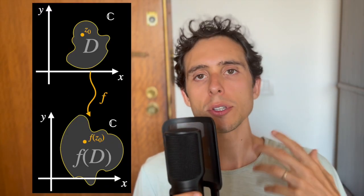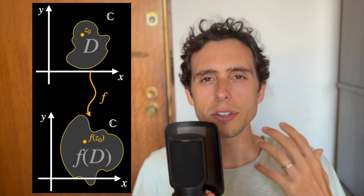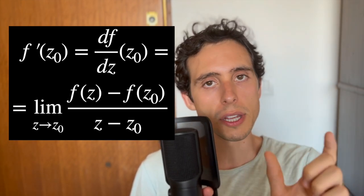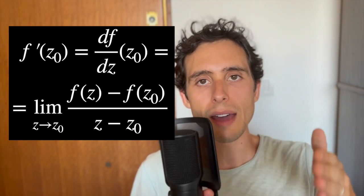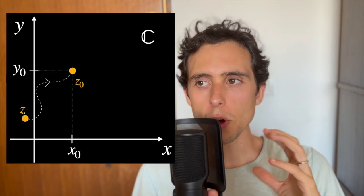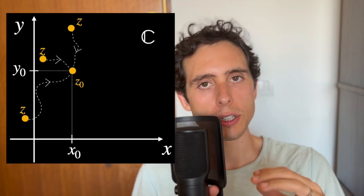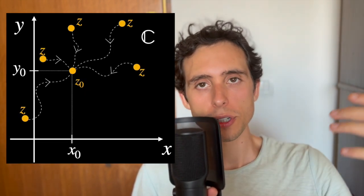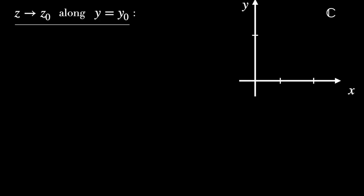As I said, f is assumed to be differentiable at z zero, which in our case is not very different from our definition in the real line of differentiability. In other words, it is the limit of the difference between f of z and f of z zero over z minus z zero. As we can see from this definition of derivatives, there is no restriction on the direction from which z can approach z zero on the complex plane.